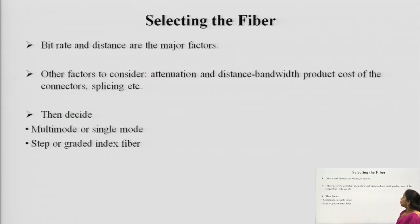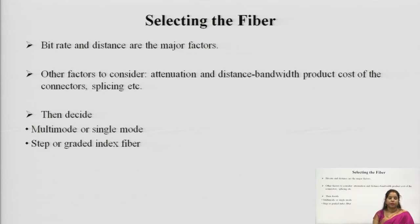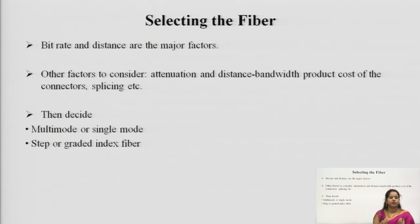Selecting the fiber: bit rate and distance are the major factors. Other factors include attenuation, distance-bandwidth product, connectors, and splicing. For single-frequency operation, single-mode fiber is preferred; for multiple frequencies, multimode fiber is used. Among multimode fibers, graded index fiber is preferred over step index because it has less dispersion. These points have already been discussed, and we use them to decide which fiber to select.